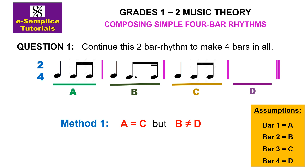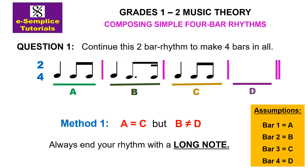Now we have copied A into C. Since B does not equal D, you need to create a rhythm for bar four — put some notes or rests together to form D. Always end your rhythm with a long note, as seen in the earlier examples. For bar four, which is D, try a long note to end the rhythm. The best long note here is a minim.